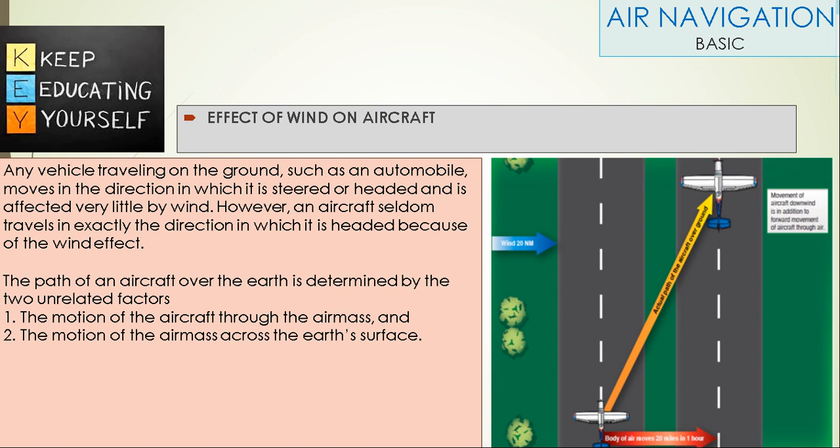Any vehicle travelling on the ground, such as an automobile, moves in the direction in which it is steered or headed and is affected very little by wind. However, an aircraft seldom travels in exactly the direction in which it is headed because of the wind effect.